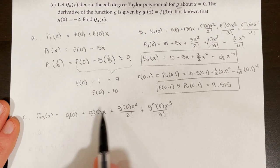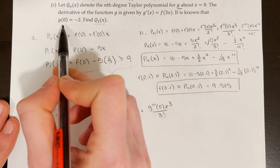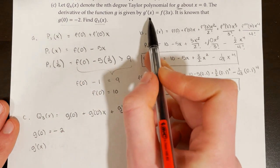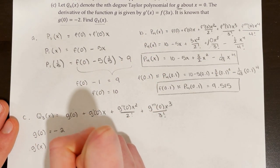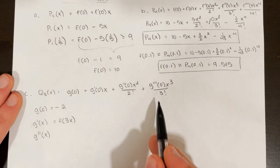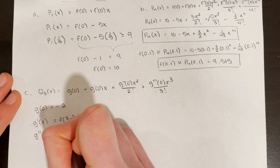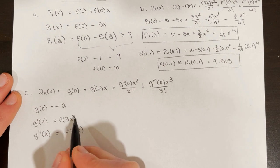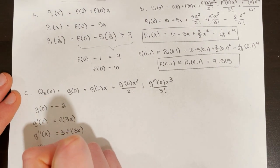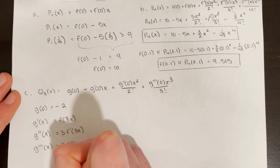We need g of 0, g prime of 0, g double prime of 0, and g triple prime of 0. g of 0 is negative 2. Since g prime of x equals f of 3x, taking derivatives using the chain rule: g double prime of x equals 3 times f prime of 3x, and g triple prime of x equals 9 times f double prime of 3x. Evaluating at x equals 0: g prime of 0 equals f of 0 equals 10, g double prime of 0 equals 3 times f prime of 0 equals 3 times negative 5 equals negative 15, and g triple prime of 0 equals 9 times f double prime of 0 equals 9 times 3 equals 27.